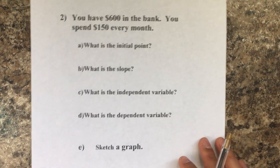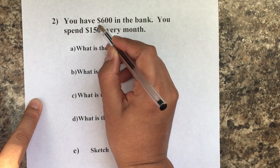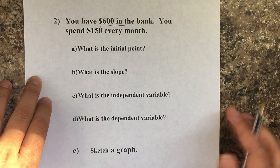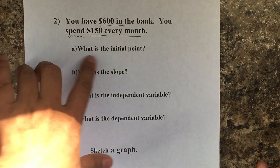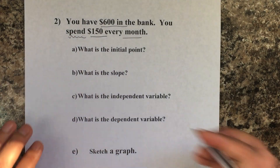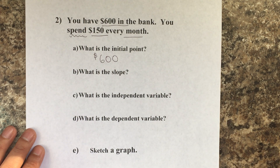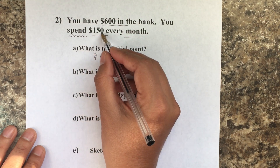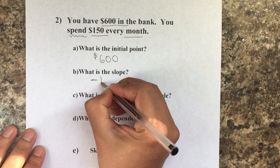Let's do the second one. It says you have six hundred dollars in the bank — that's what you have right now. You spend — that's very important — you spend $150 every month. What is the initial point? It's six hundred dollars. What is the slope? The slope is that you're spending $150, meaning it's going to go down, so it's going to be negative 150.